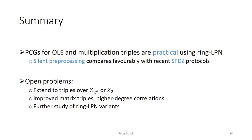In summary, we've shown that using PCGs for OLE and multiplication triples gives a practical approach using the ring LPN assumption. This expands the types of correlations we can perform efficiently using PCGs and gives us the benefit of silent preprocessing compared with previous protocols. There are still some interesting open problems: extending triple generation to work over integers modulo 2^k or modulo 2, improving the matrix triples construction, obtaining better constructions for higher degree correlations, and further study of the security of ring LPN and its different variants.